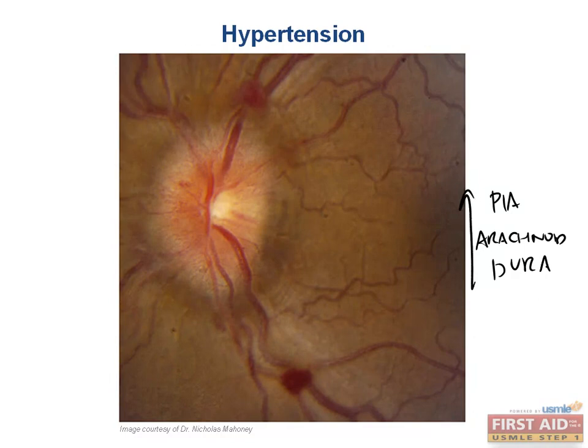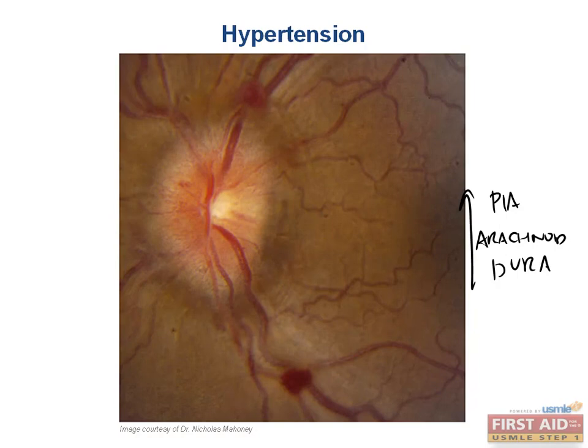Some helpful hints: Schwann cells do not cover optic nerve axons as you would expect for peripheral nerves — oligodendrocytes cover the axons in the eye. Additionally, once you damage your optic nerves you are permanently blind because, unlike peripheral nerves, the optic nerve is a component of the central nervous system and you cannot regenerate CNS neurons.